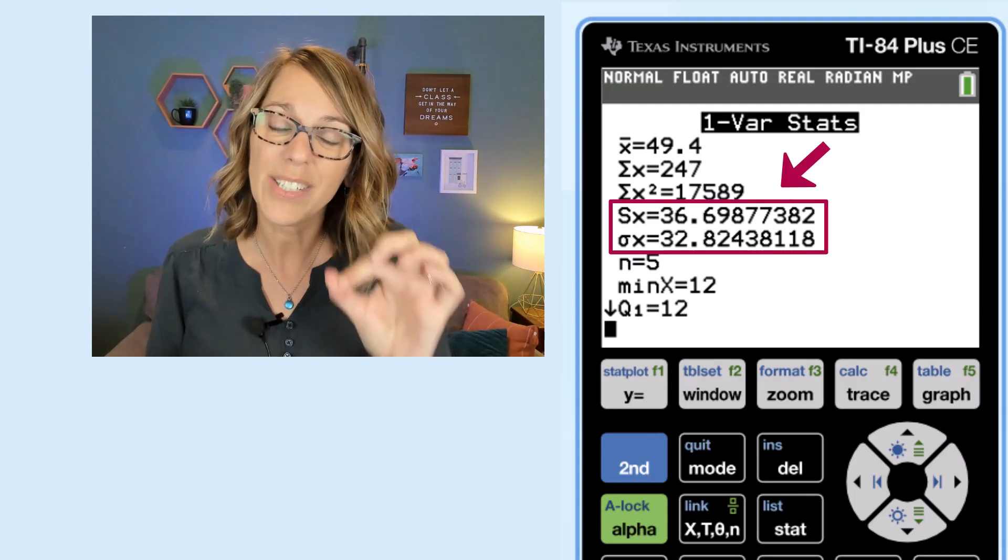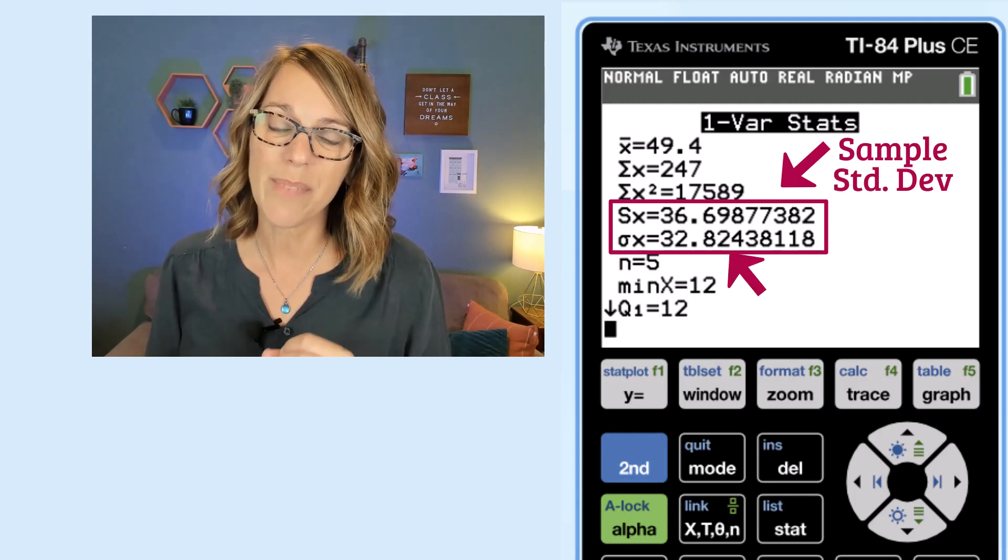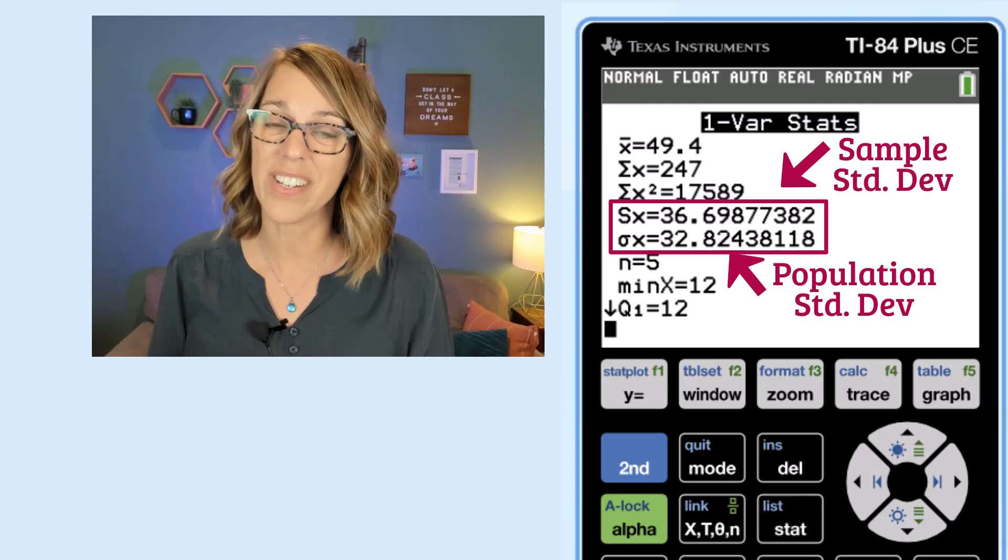That s sub x, notice it's a little bit larger, that's our sample standard deviation. And then sigma sub x is our population standard deviation.